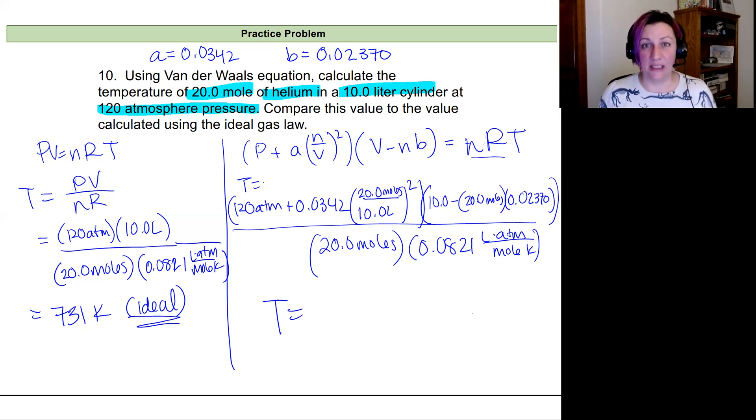So it's a lot to plug into your calculator, but with all of the parentheses, once you actually get it in and calculate it, we'll calculate a value that is 697 Kelvin. And this is for our real gas behavior.